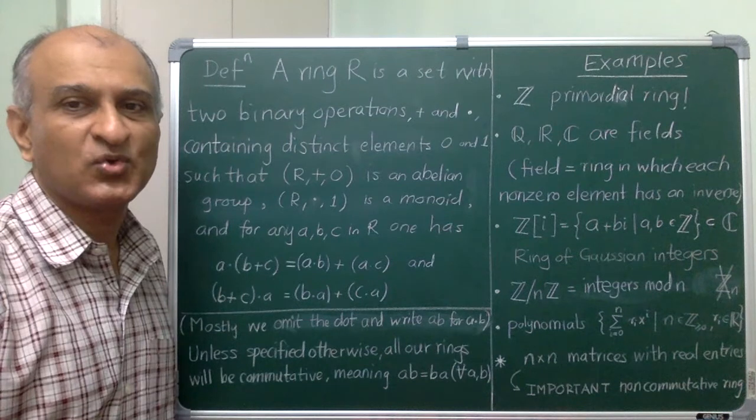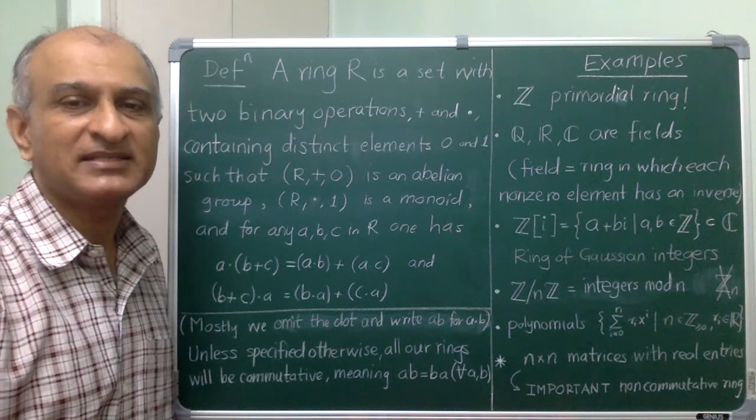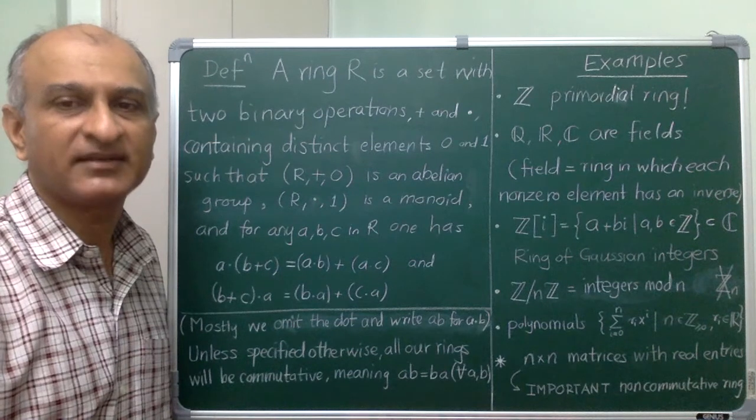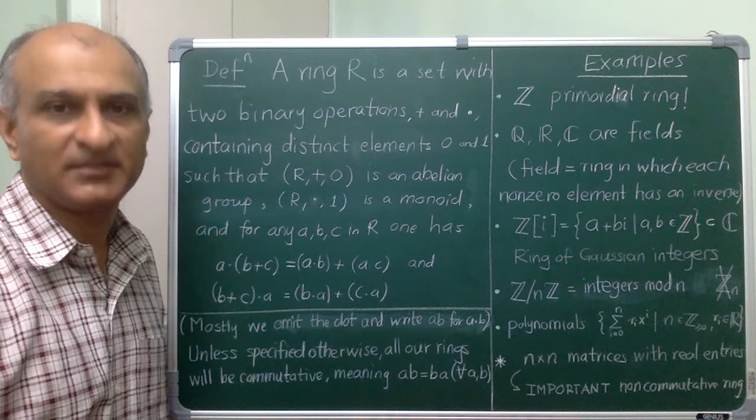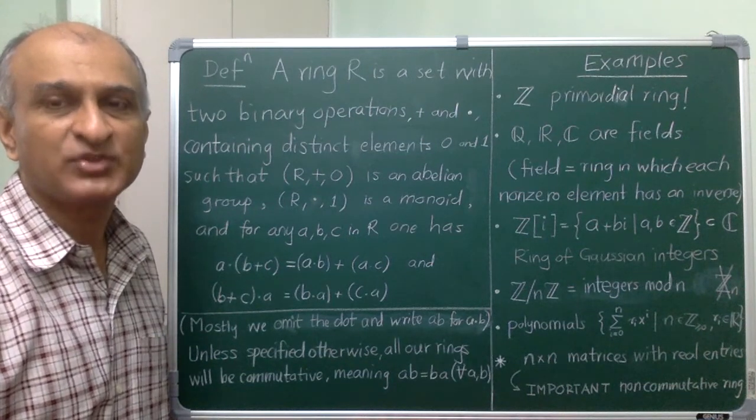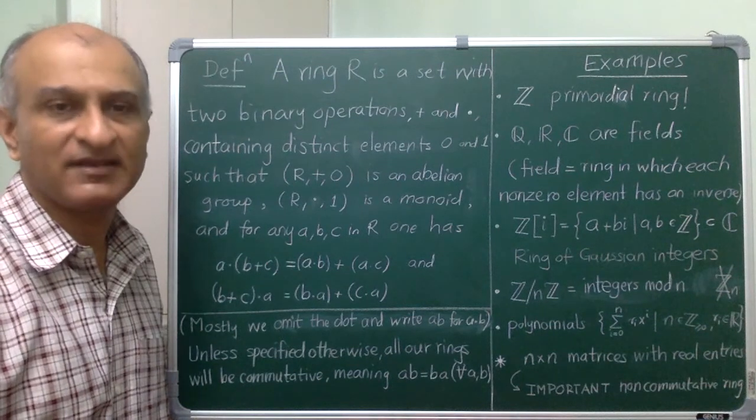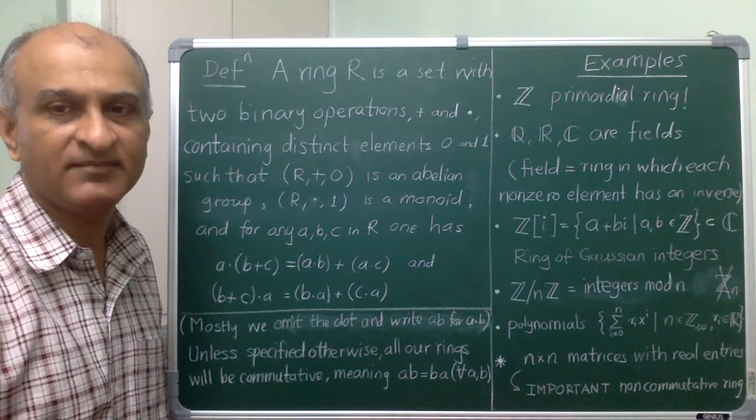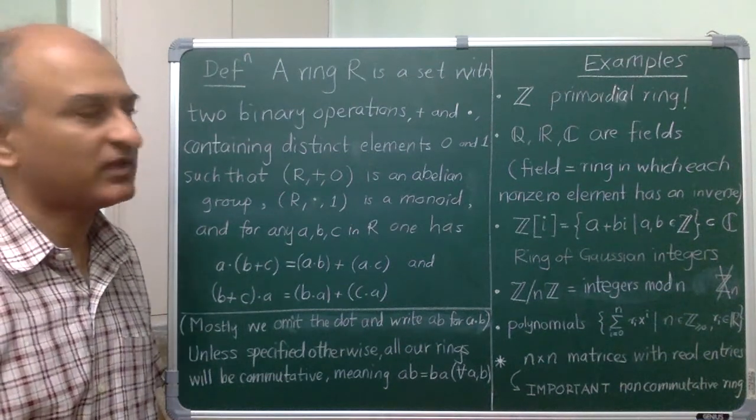Okay, so here we have some examples of rings and in all cases I have actually given you just a set but in every case there is a standard operation of addition and one of multiplication. So, using these you can and you actually should check that I have a ring in every single case. So, pause as needed. The check is mostly straightforward.